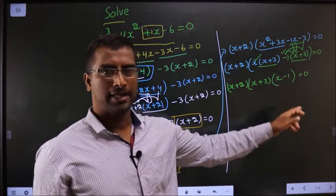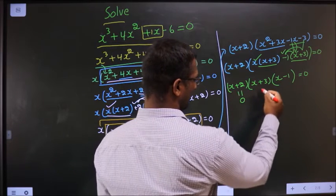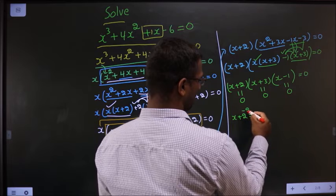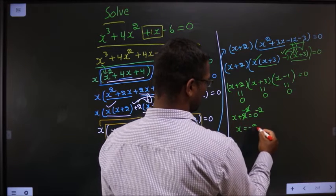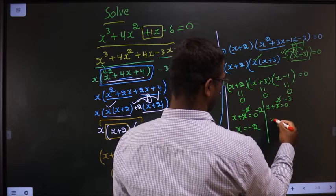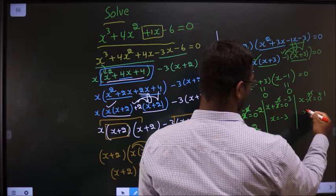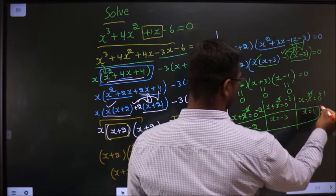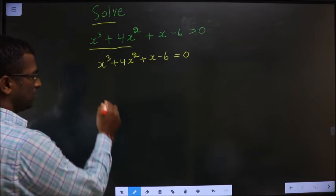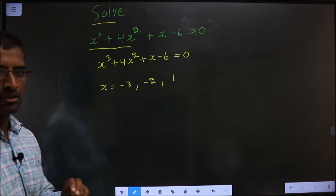Now product of these three brackets equals 0. That can only happen if either one of them equals 0. So either x plus 2 equal to 0 — giving x equal to minus 2 — or x plus 3 equal to 0 — giving x equal to minus 3 — or x minus 1 equal to 0 — giving x equal to 1. So the x values are minus 3, minus 2, and 1. Now show these values on the number line.